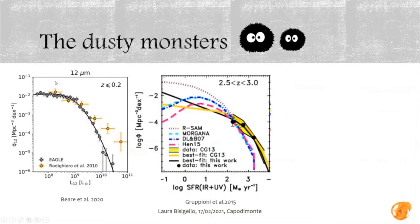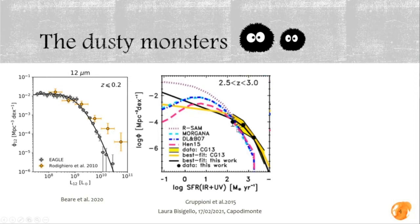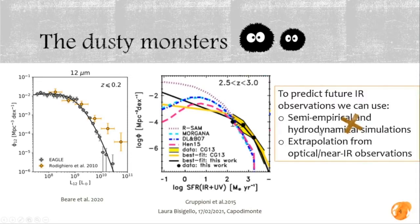If you look at a specific luminous wavelength, for example the 12-micrometer luminosity, you see similar behavior: in yellow are the data points from observations at very low redshift, and in gray is the comparison with predictions from the hydrodynamic simulation EAGLE, where again the number of very bright galaxies is underestimated. Since infrared luminosity is linked to star formation rate, you see a similar behavior in the star formation rate function: different model predictions all underpredict the most active, most infrared-luminous galaxies. So we cannot directly use semi-empirical or hydrodynamic simulations to predict for future infrared telescopes.